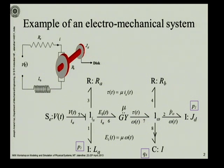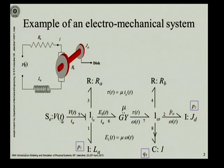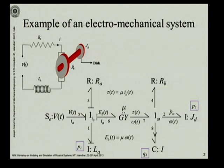Then we provide the causal strokes, placed in this fashion. We always start with the sources — here the effort is being provided by this source. Then you have the inductance, and you know this is the natural causality of the I element. R can take causality either way, but you will prefer to put causality such that you respect the causality for the one junction — only one bond is permitted to bring in information of flow inside a one junction. Here is the causality for the one junction, and now comes the issue of the causality for the gyrator.